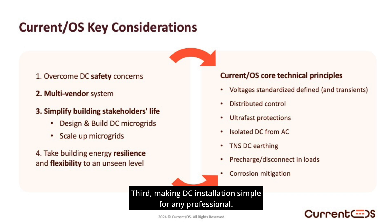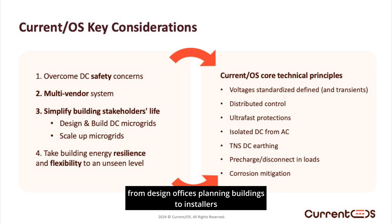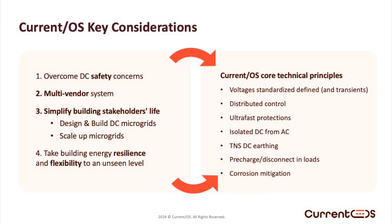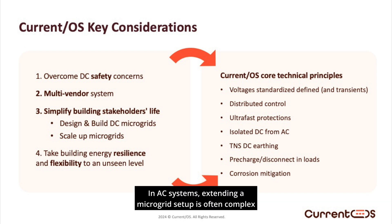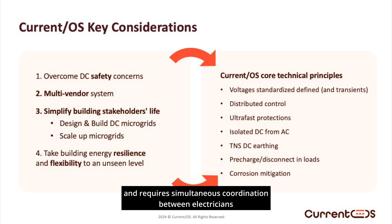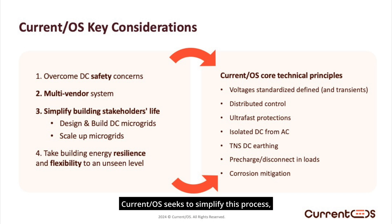Third, making DC installations simple for any professional. DC must be accessible and easily scalable to all industry intermediaries, from design offices planning buildings to installers handling projects of all sizes. DC microgrids should be easy to expand. In AC systems, extending a microgrid setup is often complex and requires simultaneous coordination between electricians and automation engineers, as two separate systems need to evolve in parallel. Current OS seeks to simplify this process, leveraging DC to provide scalable, flexible solutions.